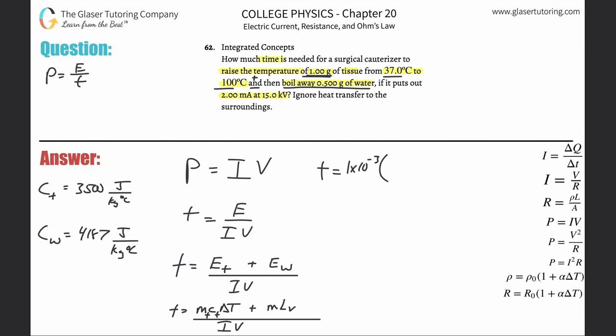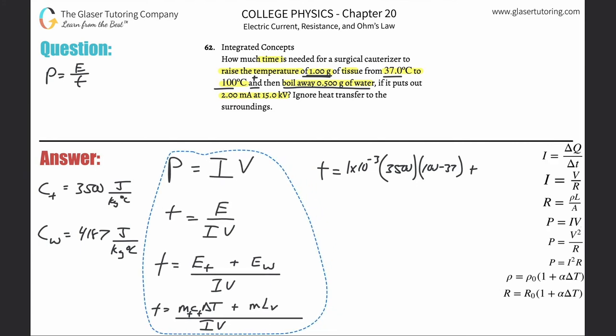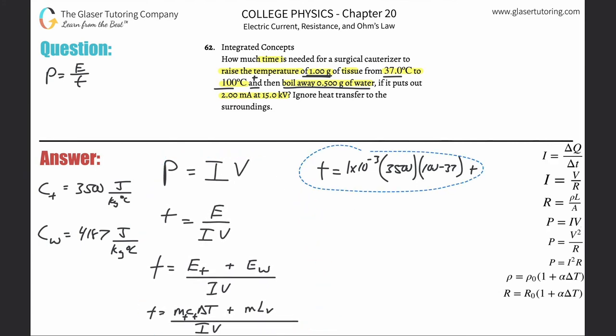The specific heat of the tissue, got to look it up, about 3,500 joules per kilogram Celsius. Those units are fine, we don't have to change anything. Then multiply by the change in temperature, so final minus initial, so 100 minus 37. And then add to that the vaporization, so 0.5 grams of water. I realize we're going to run out of a little space, let me just move this over a little more.